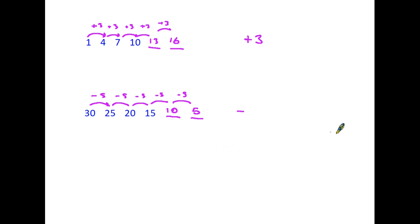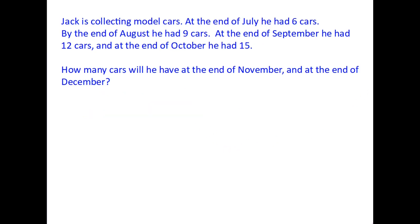Let's have a look now at a typical question. So here we have Jack who is collecting model cars and we're told that at the end of July he has six cars. Now by the end of August he had nine cars, at the end of September 12 and the end of October 15 cars, and we've been asked how many cars he'll have by the end of November and at the end of December.